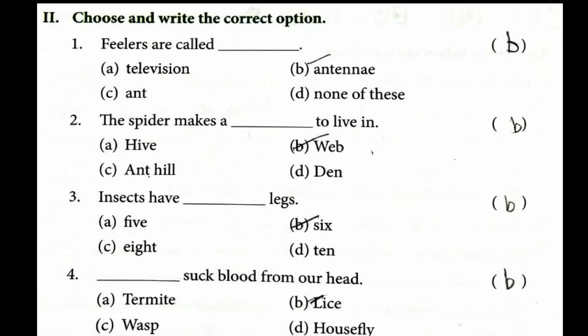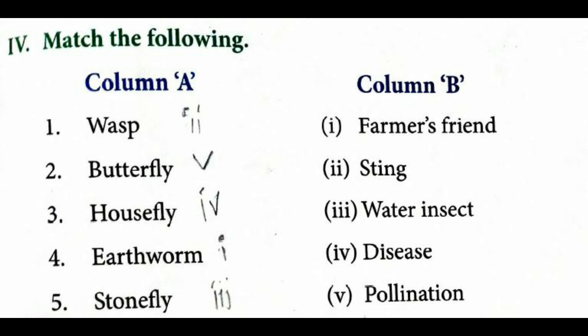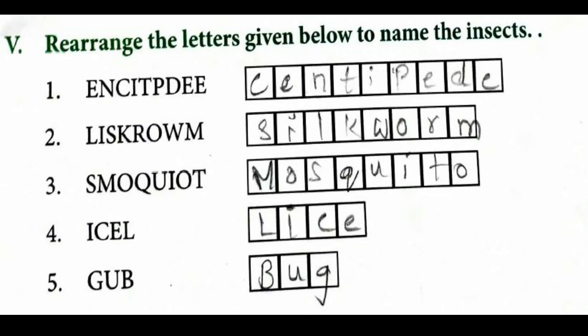Second section: Choose and write the correct option. Feelers are called antennae. The spider makes a web to live in. Insects have six legs. Lice suck blood from our heads. Third section — Fill in the blanks: Insects are tiny creatures. Bugs bite us and give us itch and pain. Worms only wriggle or creep. Termites damage the wood. Grasshoppers destroy crops. Match the following: Wasp — sting; Butterfly — pollination; Housefly — disease; Earthworm — farmer's friend; Stonefly — water insects.